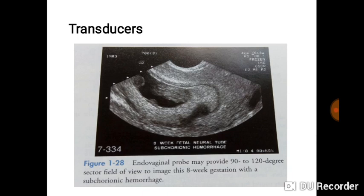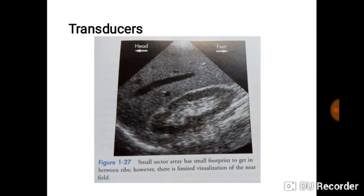This is an image obtained from a transvaginal (endovaginal) probe, which has a wider angle of view. And this is an image from a probe with a smaller footprint — you can see that at the top the angle is very small and then it goes wider toward the outskirts of the image. A small sector array probe is what is used here.